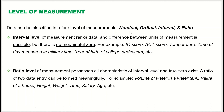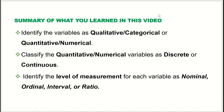So in this video we explored three things: first, identifying variables as qualitative or categorical versus quantitative or numerical; second, classifying quantitative data as discrete or continuous; and third, identifying the level of measurement as nominal, ordinal, interval, or ratio. That is the end of this video — thank you for watching.